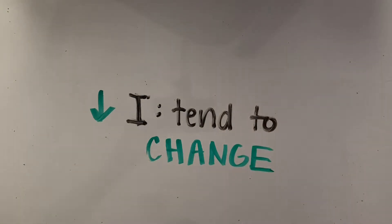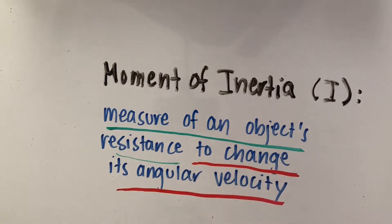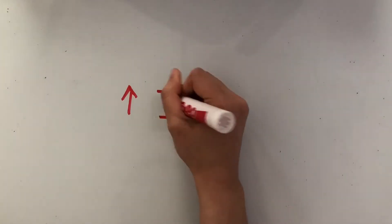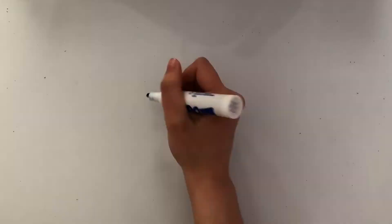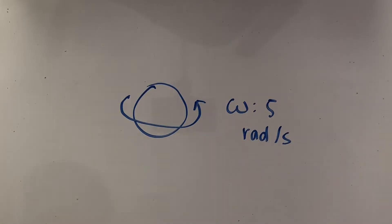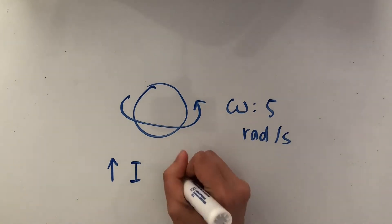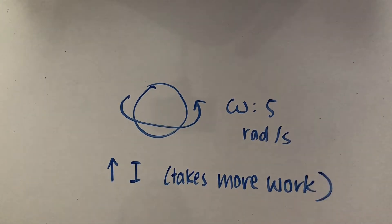The higher the moment of inertia, the more the object will want to keep its angular velocity at the same speed as it was going at originally. Take a ball for example — it's rotating at 5 radians per second. If it has a high moment of inertia, it'll take more work to stop making this ball rotate than if it had a lower moment of inertia.